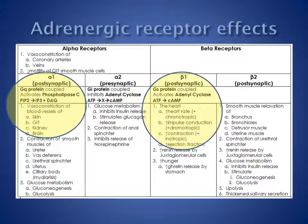The principal cardiovascular effects of inotropic agents are mediated through alpha-1 and beta-1 adrenergic receptors. Alpha-1 receptors are present in vascular smooth muscle. Stimulation causes vasoconstriction of blood vessels in the skin, the gut, the kidney, and the brain.